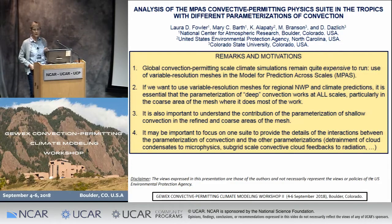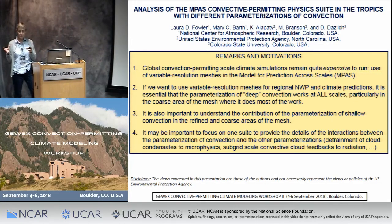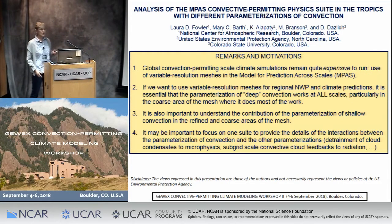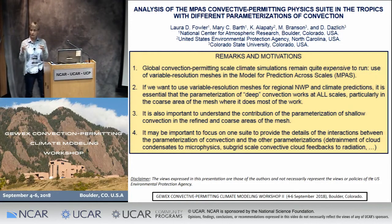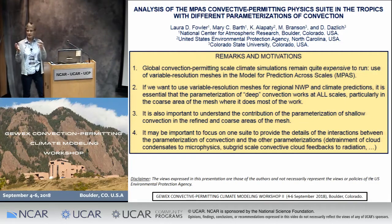One of the issues with using this kind of variable resolution mesh is that we want the parameterizations of deep convection to work at all scales — in the coarse area of the mesh as well as the most refined mesh where it's not supposed to be doing any work. It's also important to understand the parameterizations of shallow convection, which remains active within the convection scheme while the deep convection is completely removed.